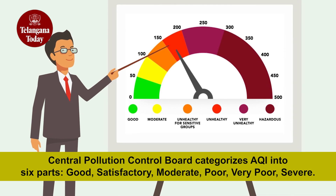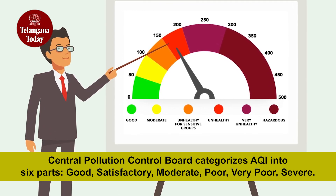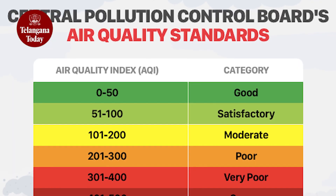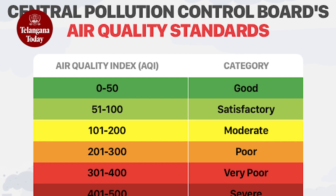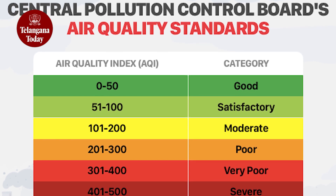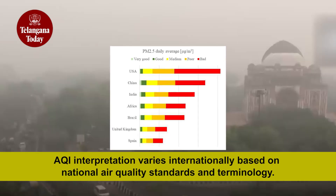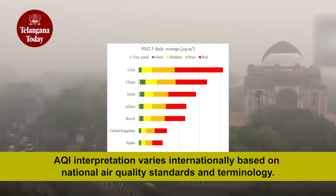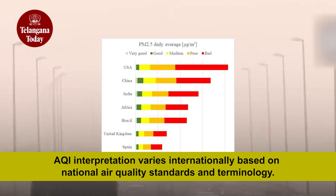As per the Central Pollution Control Board, AQI is categorized into six parts: 0–50 is Good, 51–100 is Satisfactory, 101–200 is Moderate, 201–300 is Poor, 301–400 is Very Poor, and 401–500 is Severe. Each country calculates AQI based on its national air quality standards, and the terminology used to describe the bands also varies.